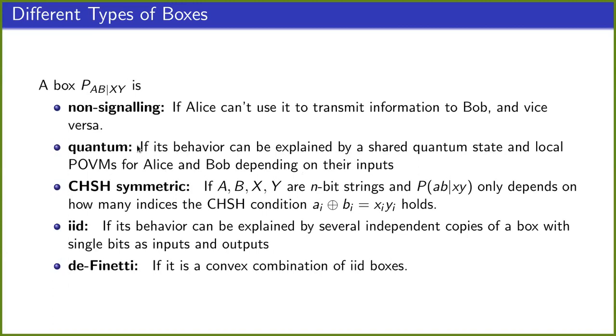Now we just note that quantum boxes are subsets of non-signaling boxes. Finally, we will restrict ourselves to CHSH symmetric boxes throughout the rest of the talk. So CHSH symmetric boxes are boxes where we have n-bit strings input and output, and where the probability of getting a and b conditioned on x and y only depends on how often the CHSH condition here is satisfied.